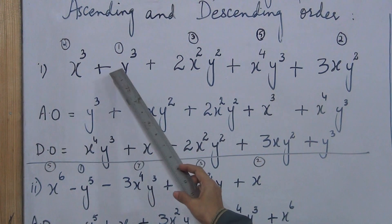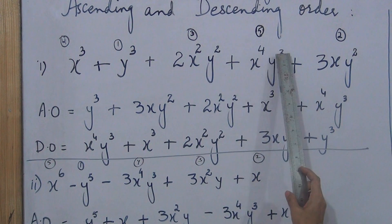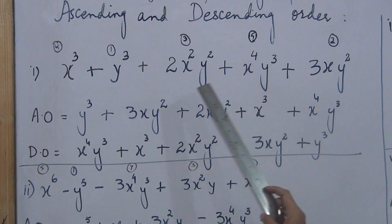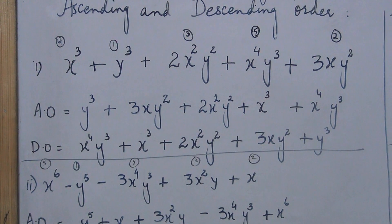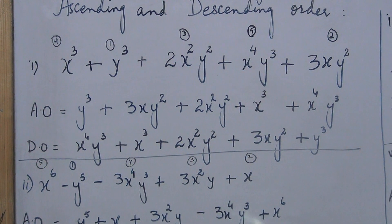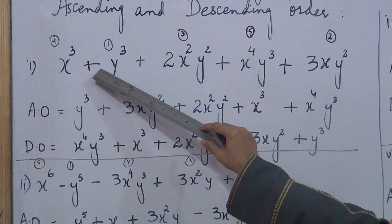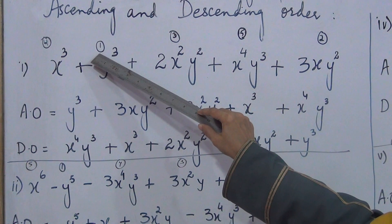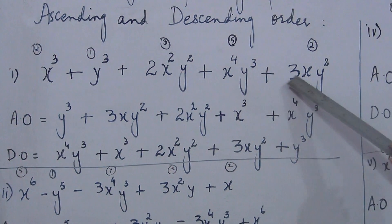We will arrange this in order. X is three, x is zero, x is two, x is four, x is one. Ascending order means from smallest to greatest power. What is smallest? Here is zero, so this is the first term. Then after zero comes one.